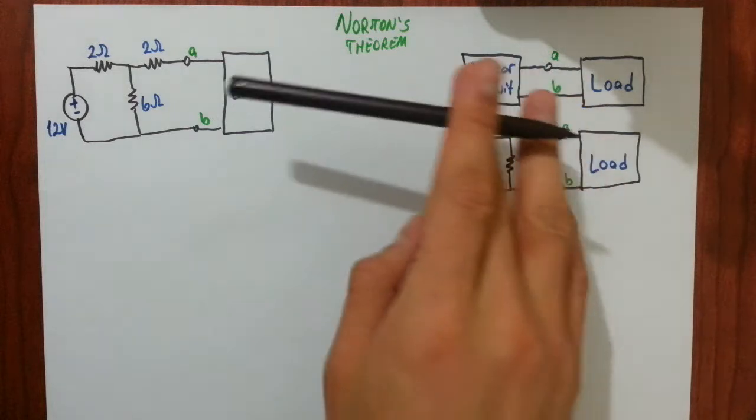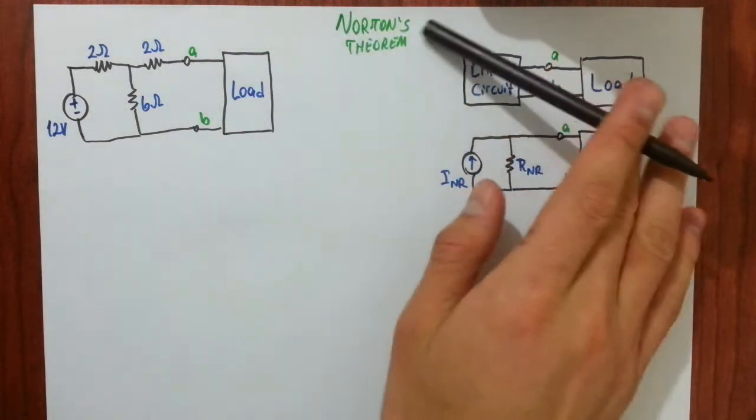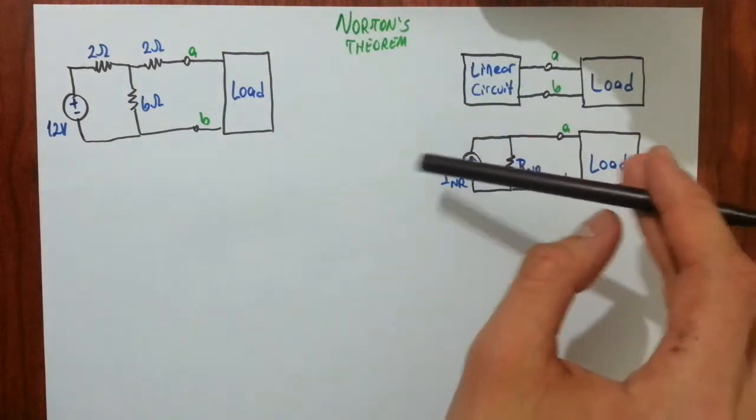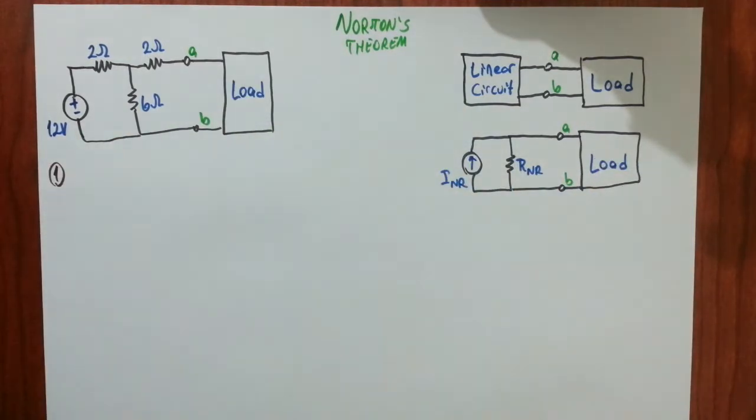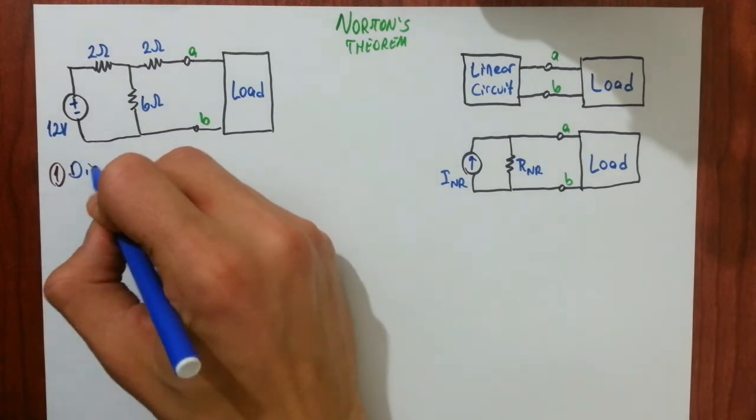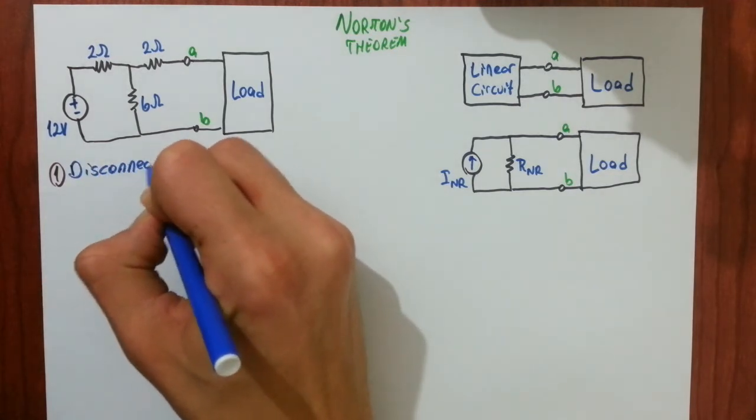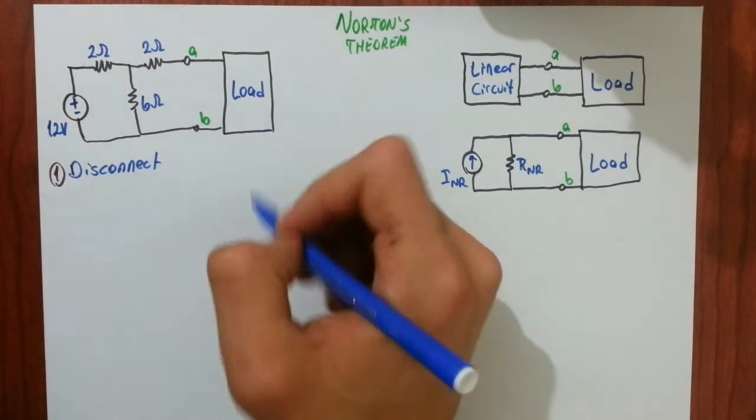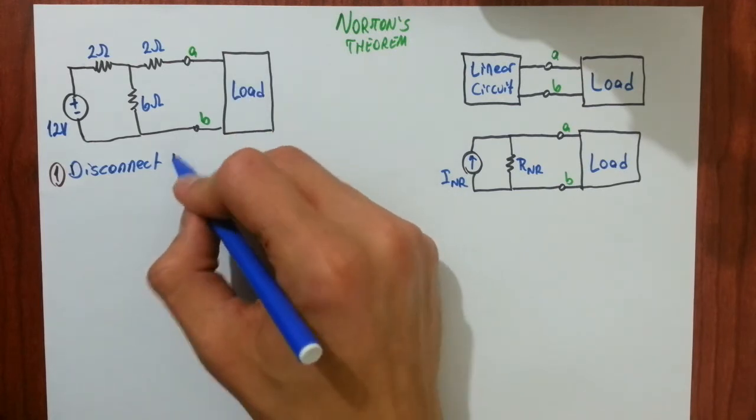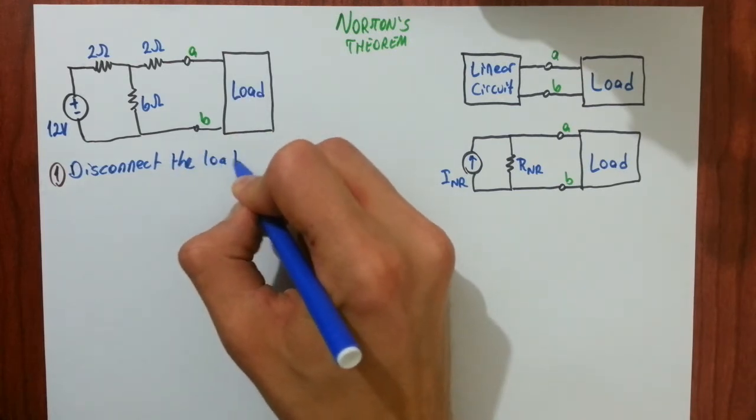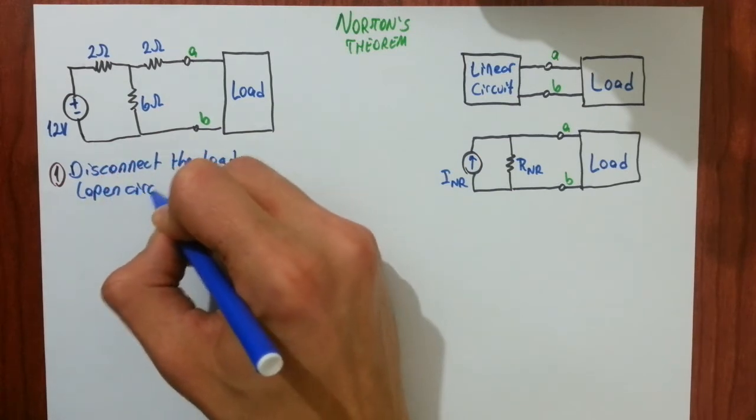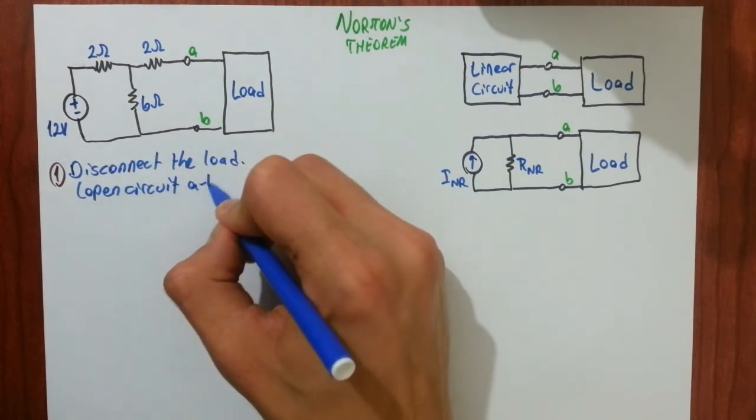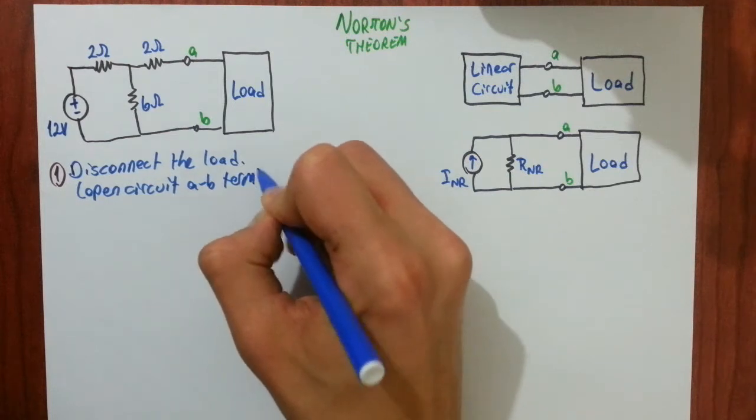In this video we will first see steps of Norton's theorem and I will apply them for this circuit. First step is to disconnect the load. You will firstly need to disconnect the load if it is connected between A and B terminals. In other words, open circuit A and B terminals.